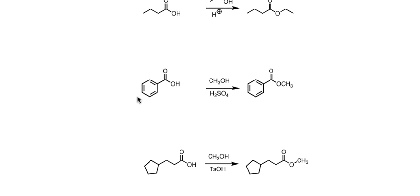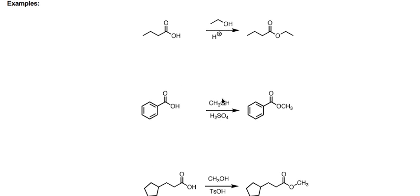In the second example, we start with a carboxylic acid and add CH₃OH — methanol — along with an acid catalyst, in this case H₂SO₄. What's the difference between H⁺ and H₂SO₄ for our purposes? Nothing. We're forming a methyl ester here, just to give a taste of the different types of acids you might see.